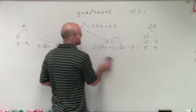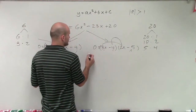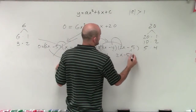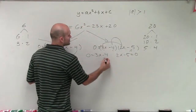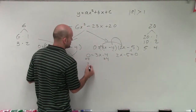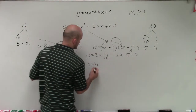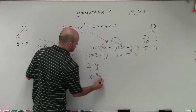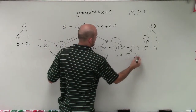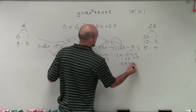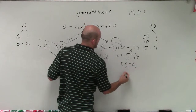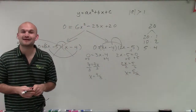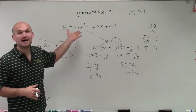Now we can apply the zero product property, so I set both factors equal to 0: 0 equals 3x minus 4, and 2x minus 5 equals 0. Then I use inverse operations to solve. So there you go, ladies and gentlemen — that is how you find your solutions by solving by factoring. Thanks.